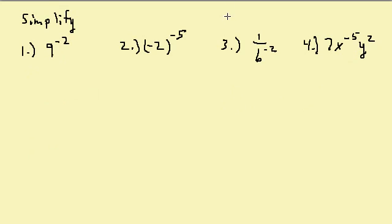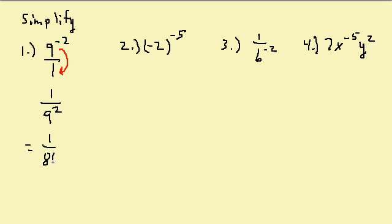Now let's look at negative exponents. Whenever we're simplifying, we want our exponents to be positive. For the first one, you can look at this as being over 1. To make the exponent positive, I take this 9 to the negative 2 and move it down to the denominator. By moving it down, it changes the sign of the exponent to positive. So this is equal to 1 over 81.